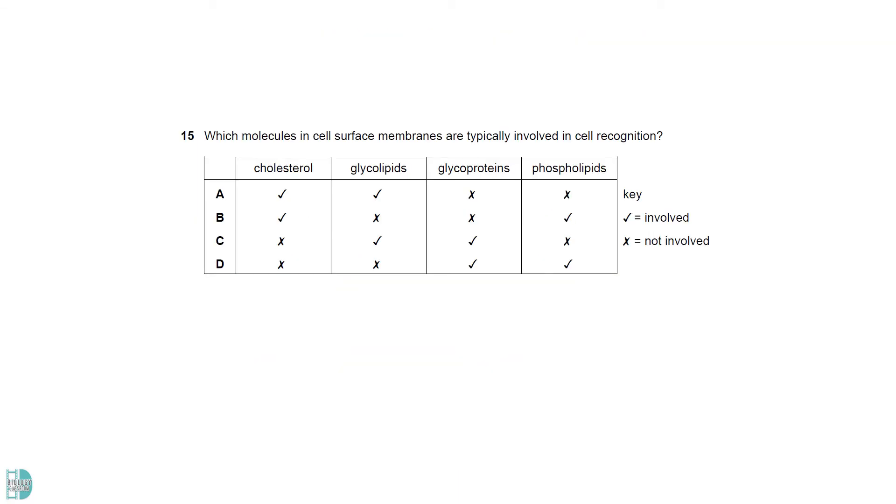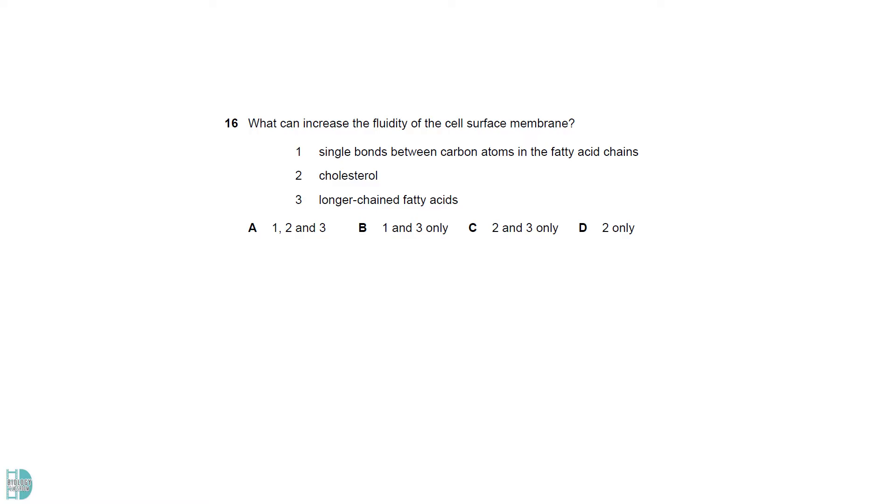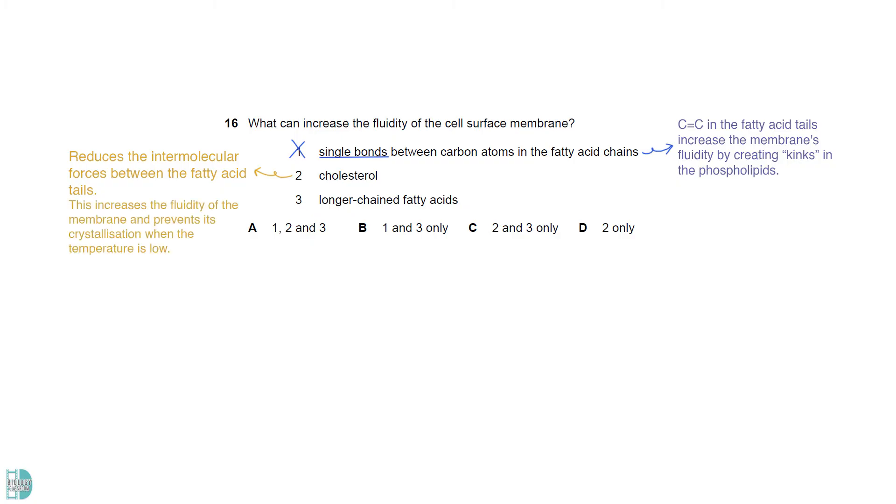Glycolipids and glycoproteins can act as the antigen on the cell surface membrane. Hence, they are the molecules involved in cell recognition. Carbon-carbon double bonds in the fatty acid tails increase the membrane's fluidity by creating kinks in the phospholipids. So, one is wrong as it mentions the single bonds. Cholesterol can reduce the intermolecular forces between the fatty acid tails. This increases the fluidity of the membrane and prevents its crystallization when the temperature is low. Longer chain fatty acids increase the intermolecular interactions between the phospholipid molecules leading to a reduction of fluidity and an increase in rigidity.